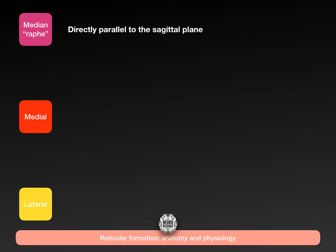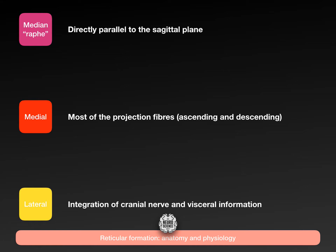The median raf is directly parallel to the sagittal plane. The medial column contains most of the projection fibres — going from the brainstem up into the cortex and subcortex, and down into the spinal cord. If you see a projecting system and it isn't otherwise stated, you can assume it is the medial column of the reticular formation. Laterally is the integration of cranial nerves and visceral information, allowing all 12 cranial nerve pairs to respond to the interoceptive environment — that within your body, as opposed to the outside.